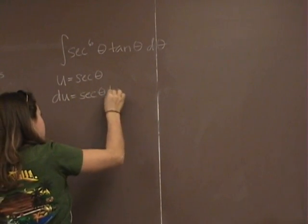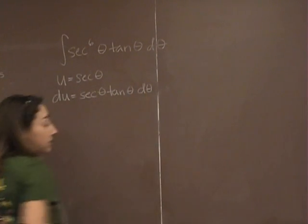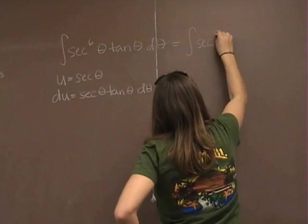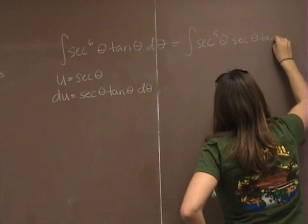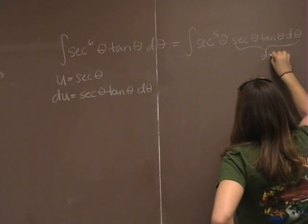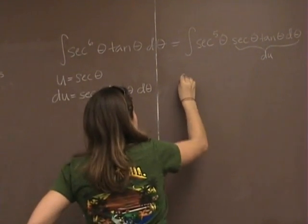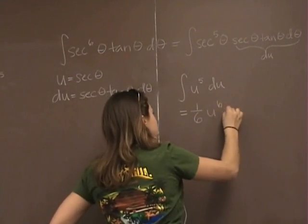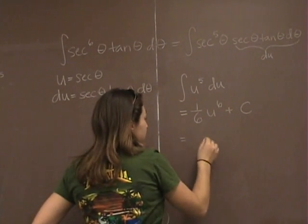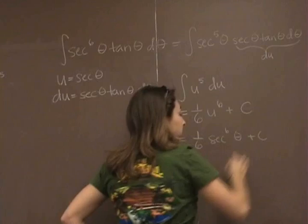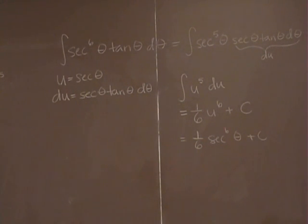So if we let u equal secant theta, du is going to be secant theta tangent theta d theta. So do I see my du up here? Yeah, I do. I just need to rewrite this as secant to the fifth theta times secant theta tangent theta d theta. I'm just taking one of those secants out of that power. Then all of this becomes my du. So what I'd really end up with is the integral of u to the fifth du, which is one sixth u to the sixth plus c, which is really one sixth secant to the sixth theta plus c.